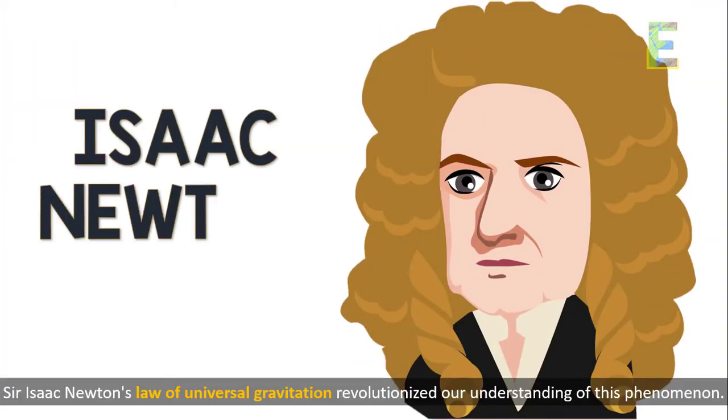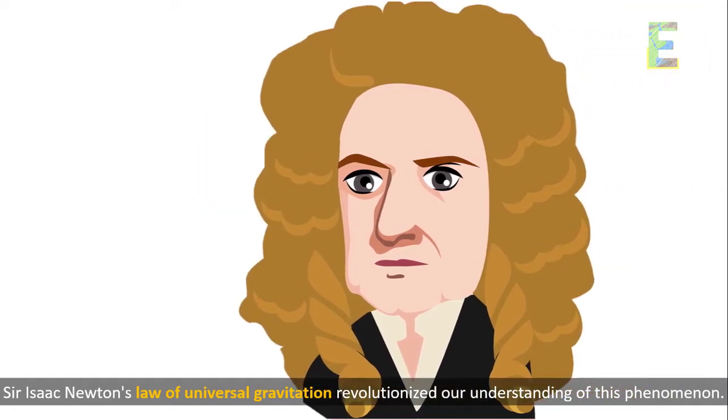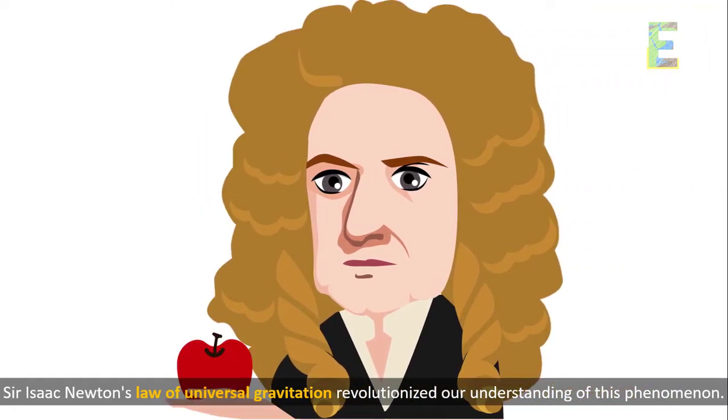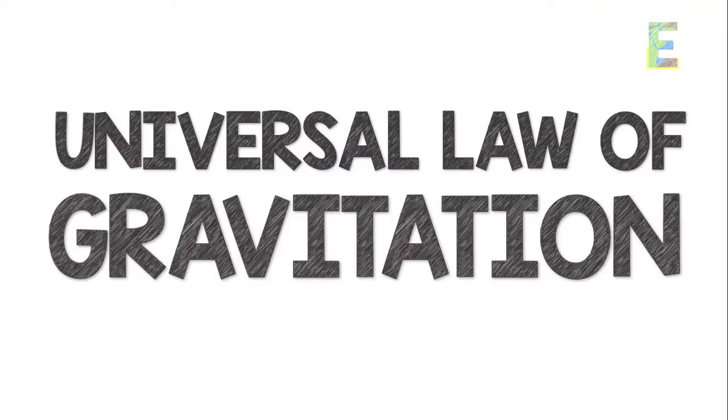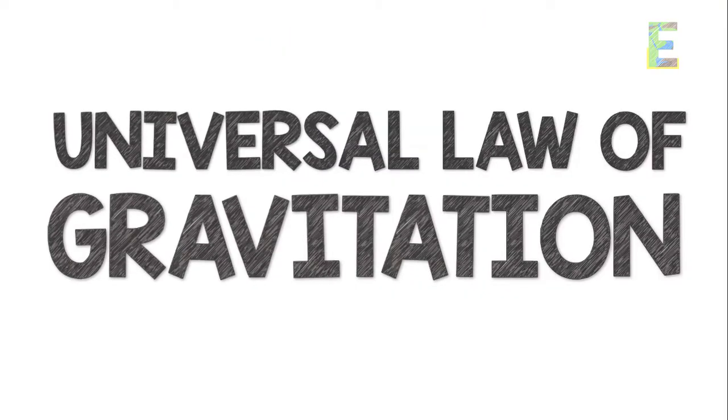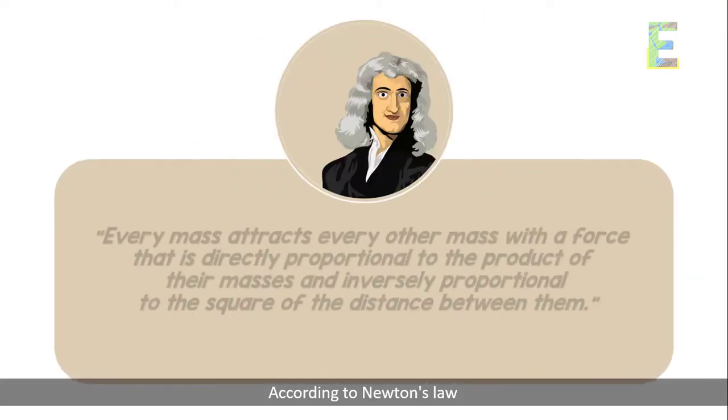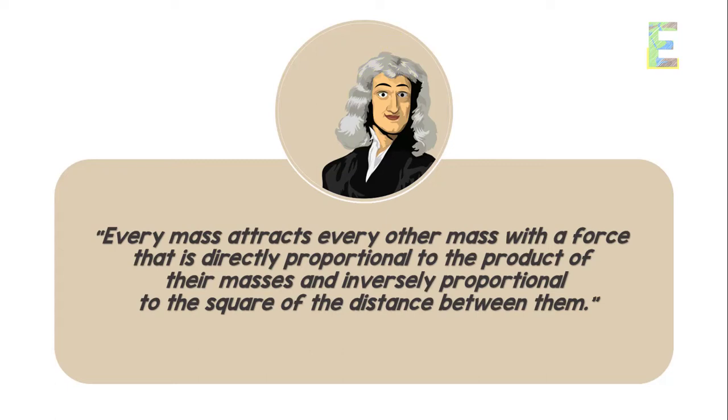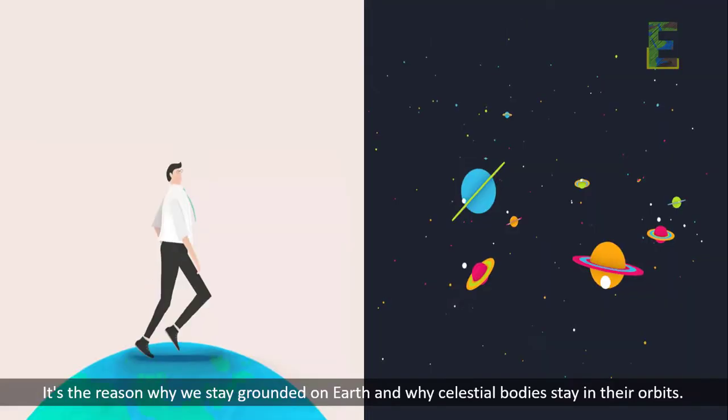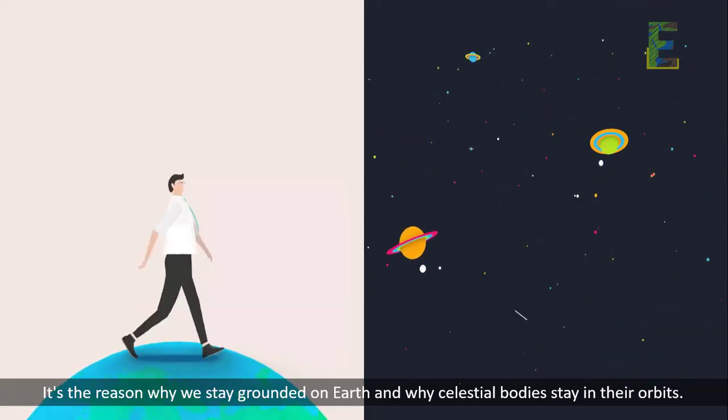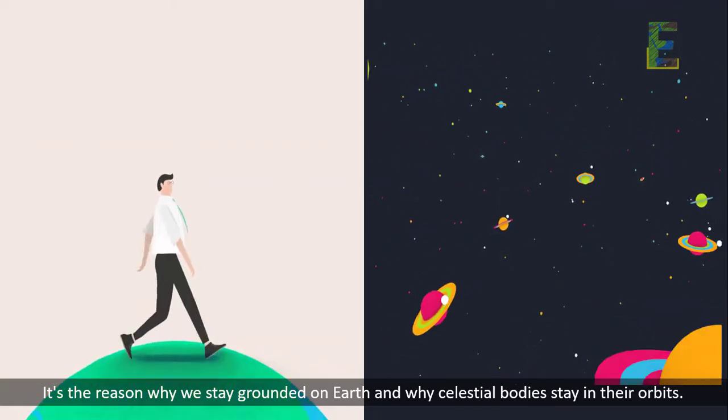Sir Isaac Newton's law of universal gravitation revolutionized our understanding of this phenomenon. Universal law of gravitation: According to Newton's law, every mass attracts every other mass with a force that's directly proportional to the product of their masses and inversely proportional to the square of the distance between them. It's the reason why we stay grounded on Earth and why celestial bodies stay in their orbits.